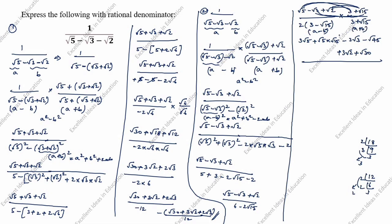The denominator uses the (a minus b)(a plus b) formula: a squared minus b squared, where a is 3 and b is root 15. So denominator is 2 times (3 squared minus root 15 squared).